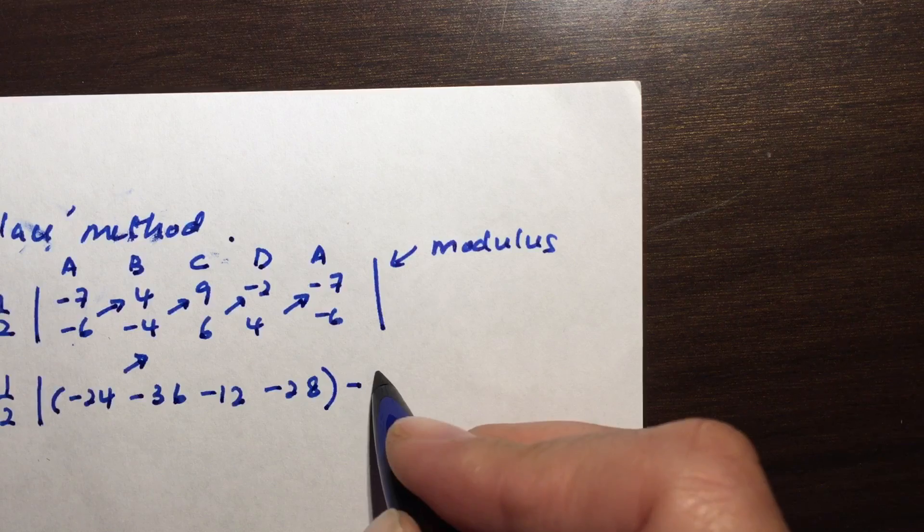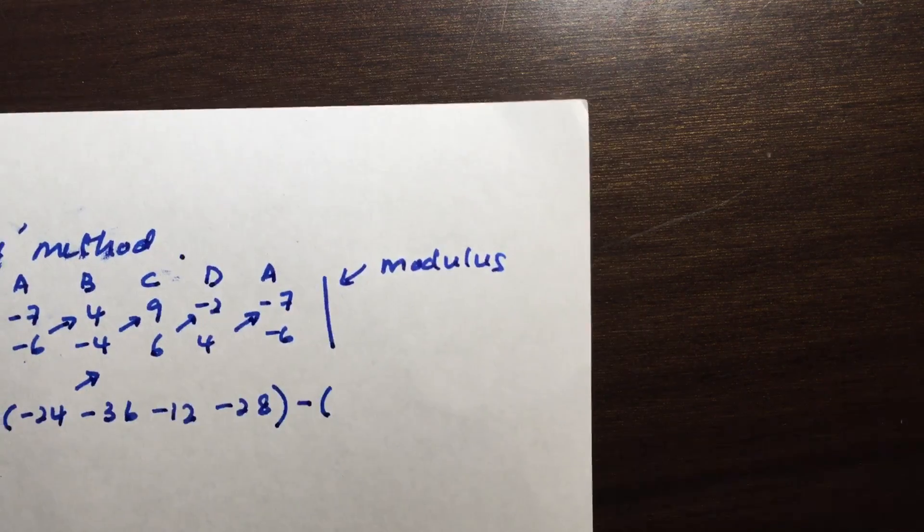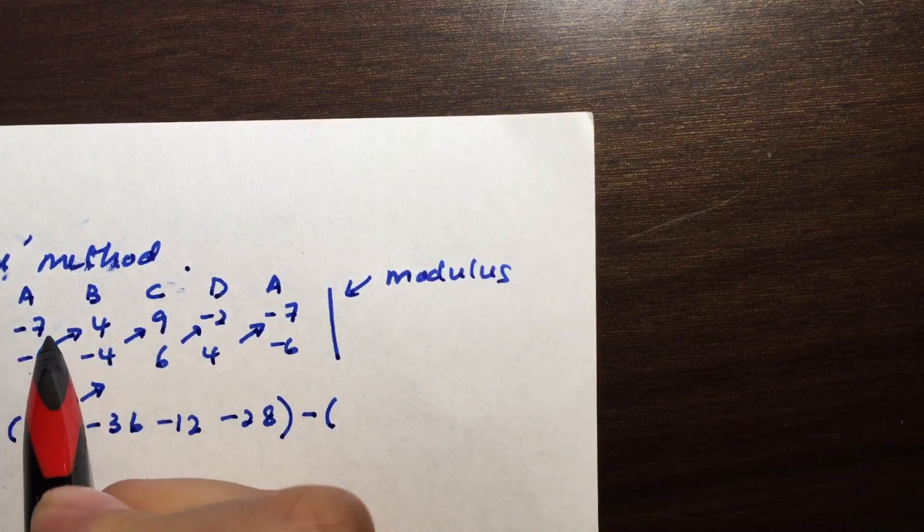Now the first group is the up group. I'm going to take the difference with the second group, which is what I call the down group. So this is the down group.